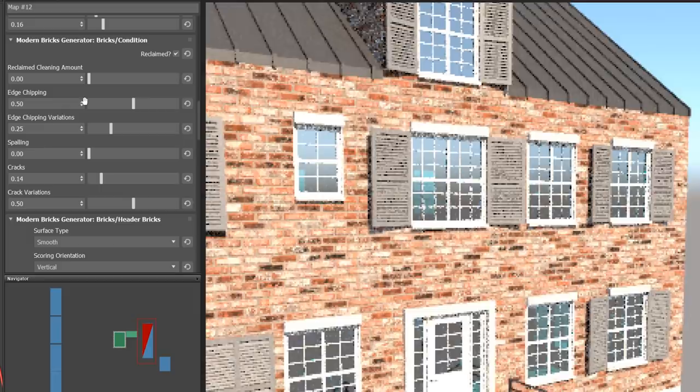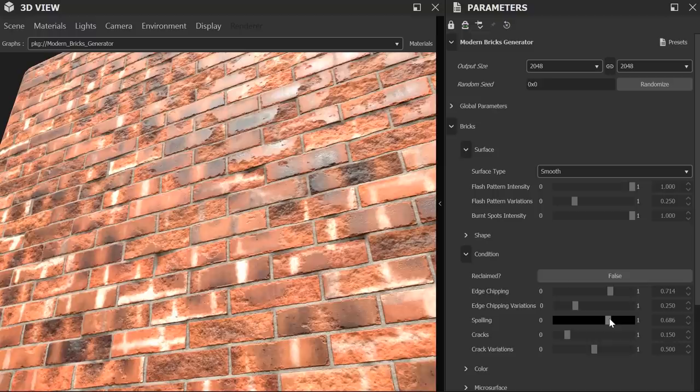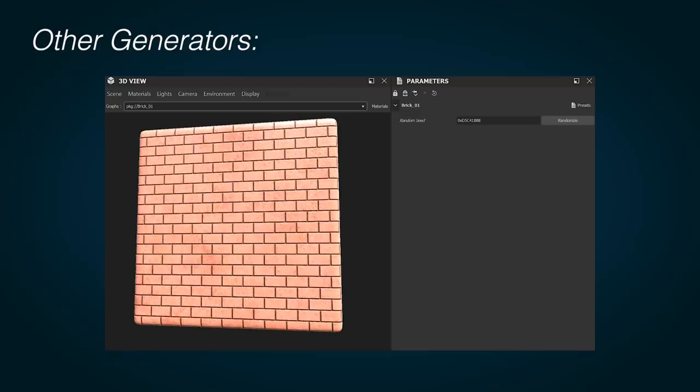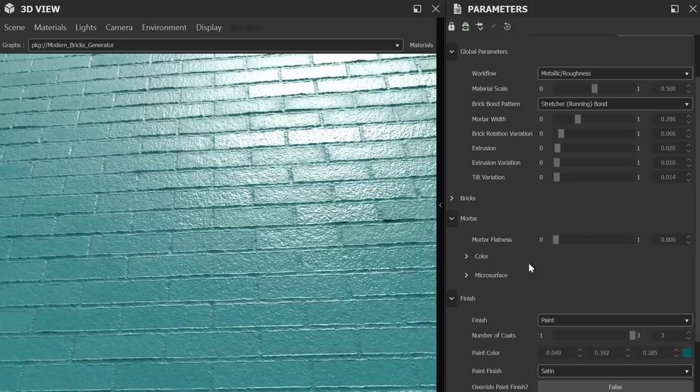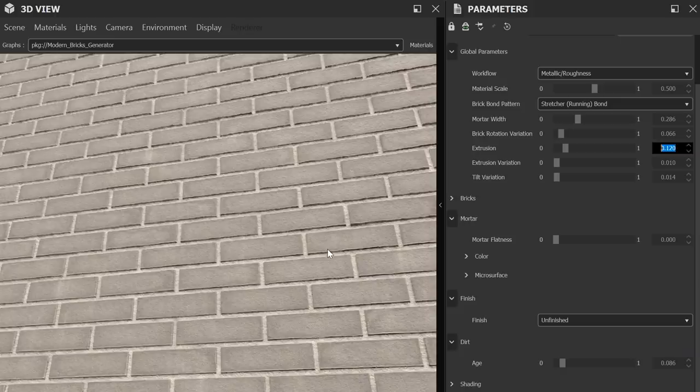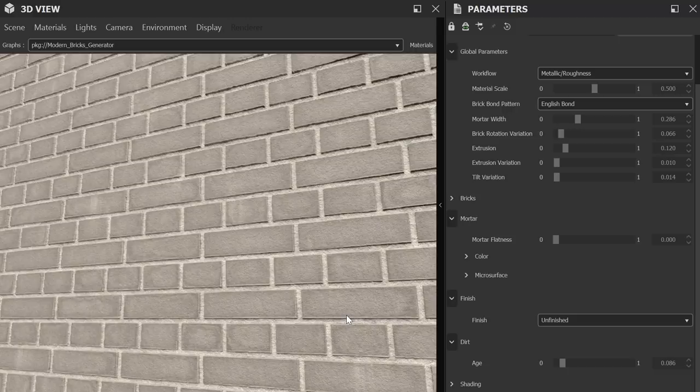Now we're certainly not the first to create procedural generators like this, but we are the first to make them this powerful. Most generators only create a small amount of materials, which means you often fall back to the same problem as before, digging around online to find something that matches what you need. But we've learned that what most ArcVis artists need is flexibility and speed. So instead of wasting time trying to find a special generator that makes English brick, ours has that setting in a drop down.